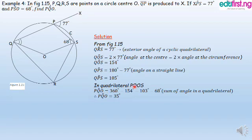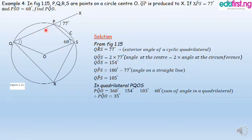In quadrilateral PQOS, the sum of angles equals 360 degrees. Therefore, angle PQO equals 360 minus 154 minus 103 minus 68 degrees. We have 154 degrees for the central angle, 103 degrees for angle QPS, and 68 degrees for angle PSO. Therefore PQO equals 35 degrees.